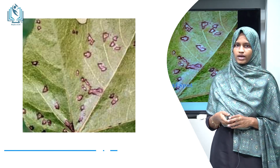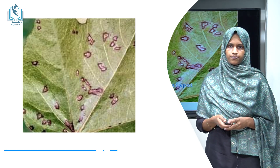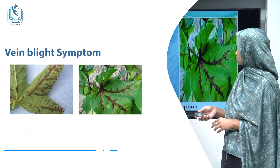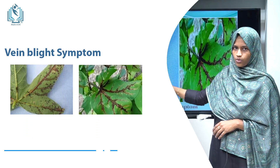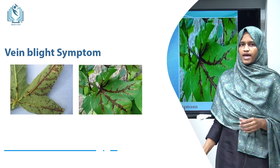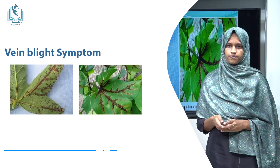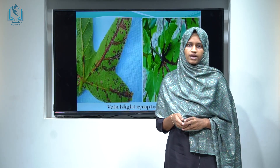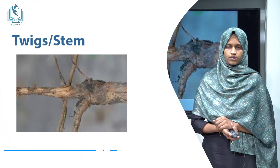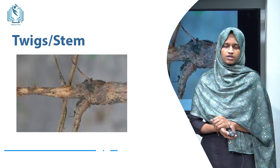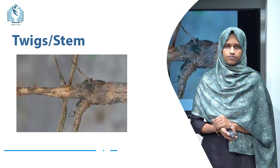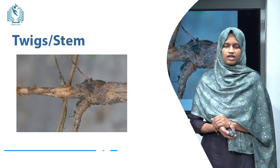That ring area is called a halo. Black streaks are formed along the veins due to systemic infection. This infection spreads along the veins, causing vein blight symptoms. The infection from leaves may also spread into the stem. The twigs may get infected with dark brown lesions, which enlarge to form black dry twigs. The twigs contain defoliated branches.